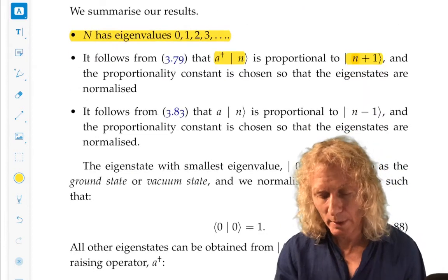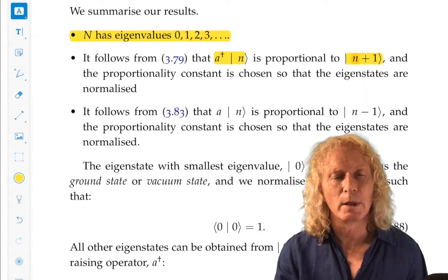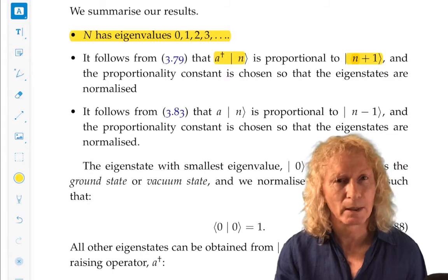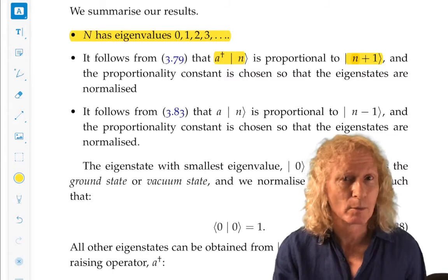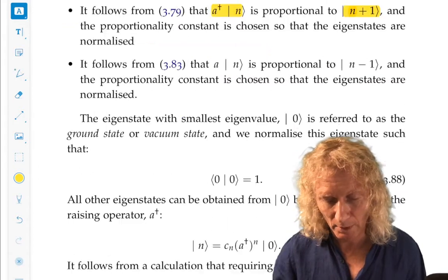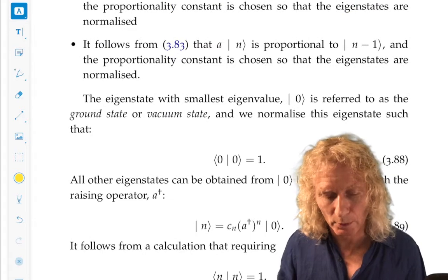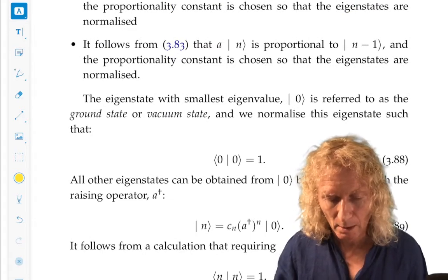Proportional, why? Because we can't guarantee that if we operate on a normalized eigenstate with an operator, it stays normalized. So we say it's proportional to, but we're going to normalize it.